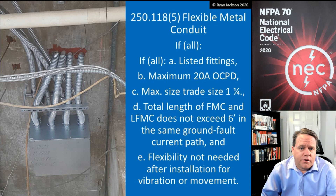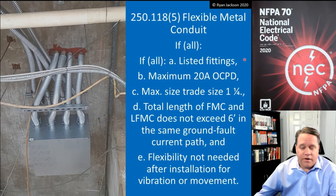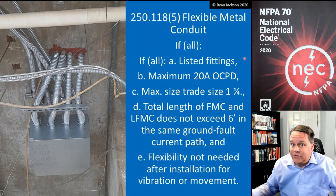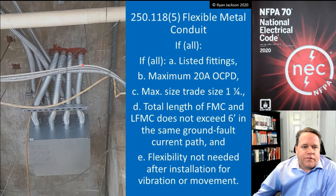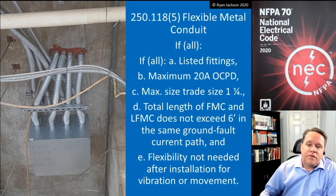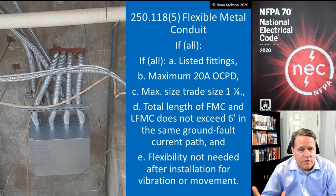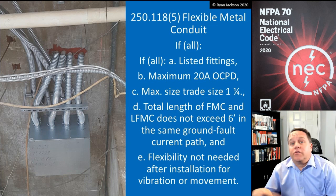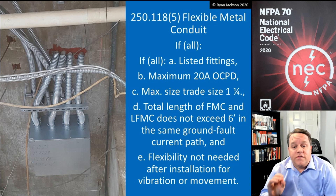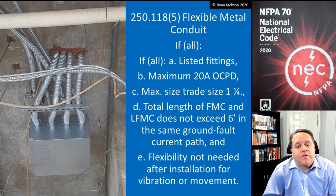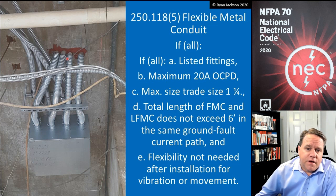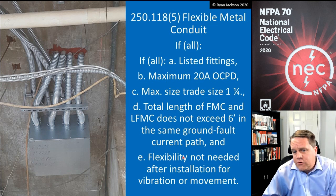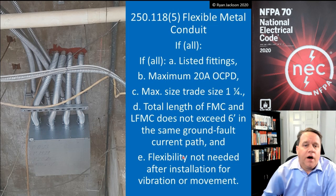We can use flexible metal conduit as the equipment grounding conductor if you meet all of these criteria: A) you must use listed fittings; B) maximum 20-amp overcurrent device; C) maximum 1¼-inch trade size for the raceway; D) the total length of flexible metal conduit plus liquidtight flexible metal conduit does not exceed six feet in the same ground fault current path; and E) flexibility is not needed after installation for vibration or movement. So if those conduits are less than six feet and you're using a maximum 20-amp overcurrent device, you do not need a green or bare wire inside.